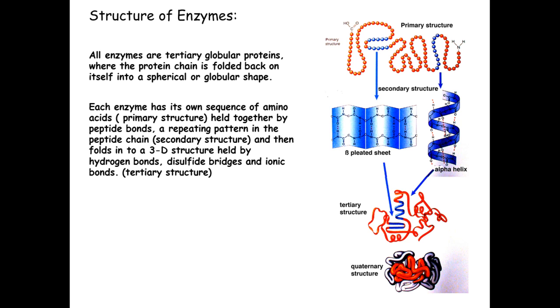The quaternary structure is slightly different. The quaternary is when you have more than one polypeptide chain joined together to form a certain structure. The example of that is haemoglobin.